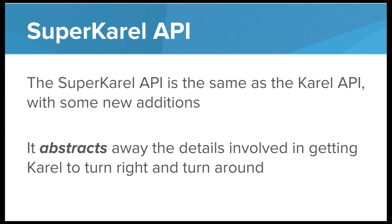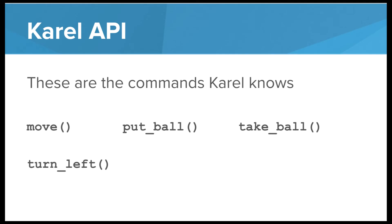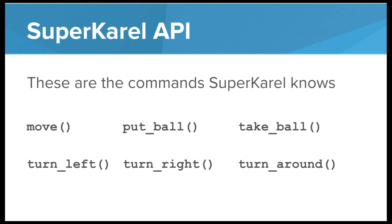The Super Carol API is even better. It's exactly the same as the Carol API but with some new additions. In addition to abstracting away the process involved in getting Carol to move across the screen, it abstracts away the details involved in getting Carol to turn right and turn around. It used to be that we had to define those functions every single time, but now those are built into the API. The Carol API building blocks are move, put ball, take ball, and turn left. The Super Carol API is the same but we've also added turn right and turn around.